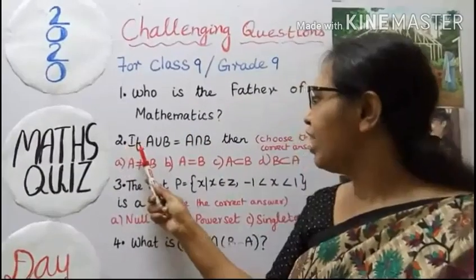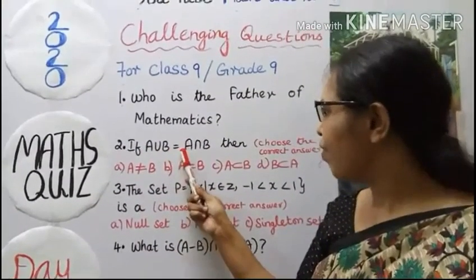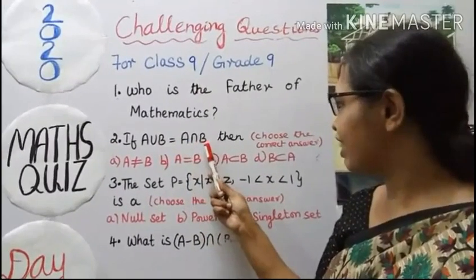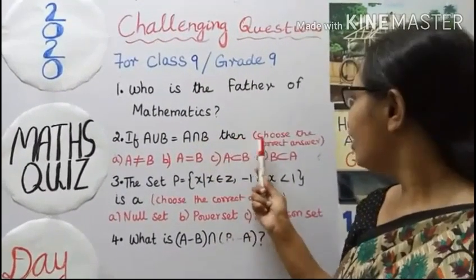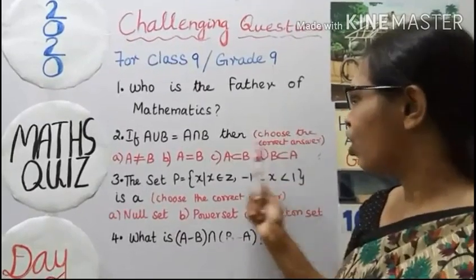Second question. If A union B equal to A intersection B, then choose the correct answer. Options given.